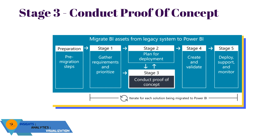The output from this stage is a Power BI solution that is narrow in scope, addresses the initial open questions, and is ready for additional work in Stage 4 to make it production ready. We don't intend for the POC to be disposable work — rather, we expect it to be an early iteration of the production-ready solution. In your organization, you may refer to this activity as a prototype, pilot, mock-up, quick start, or MVP.